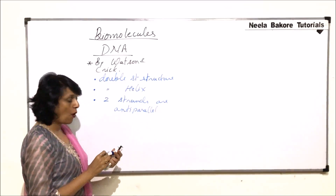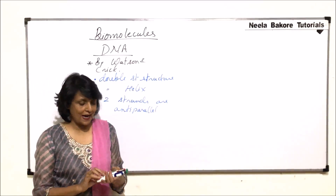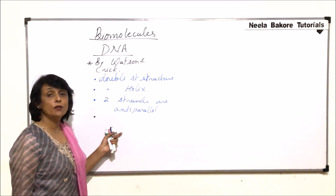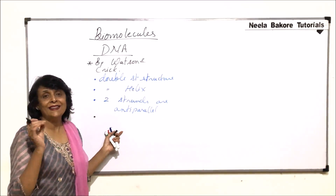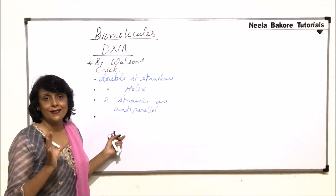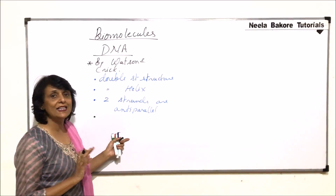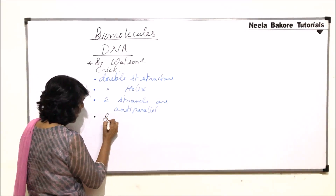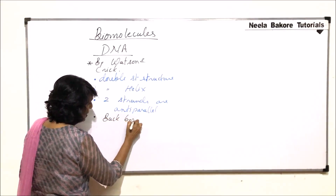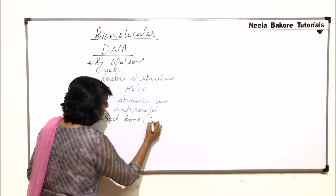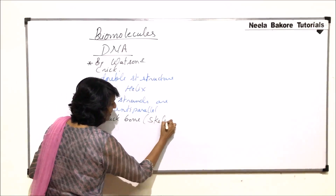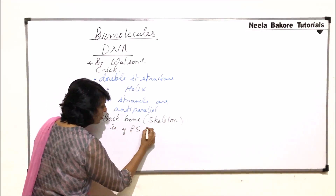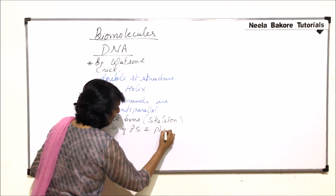We will take up all these points to understand the structure. The next point given by them was that the backbone or skeleton of DNA is made up of pentosugar and phosphate.